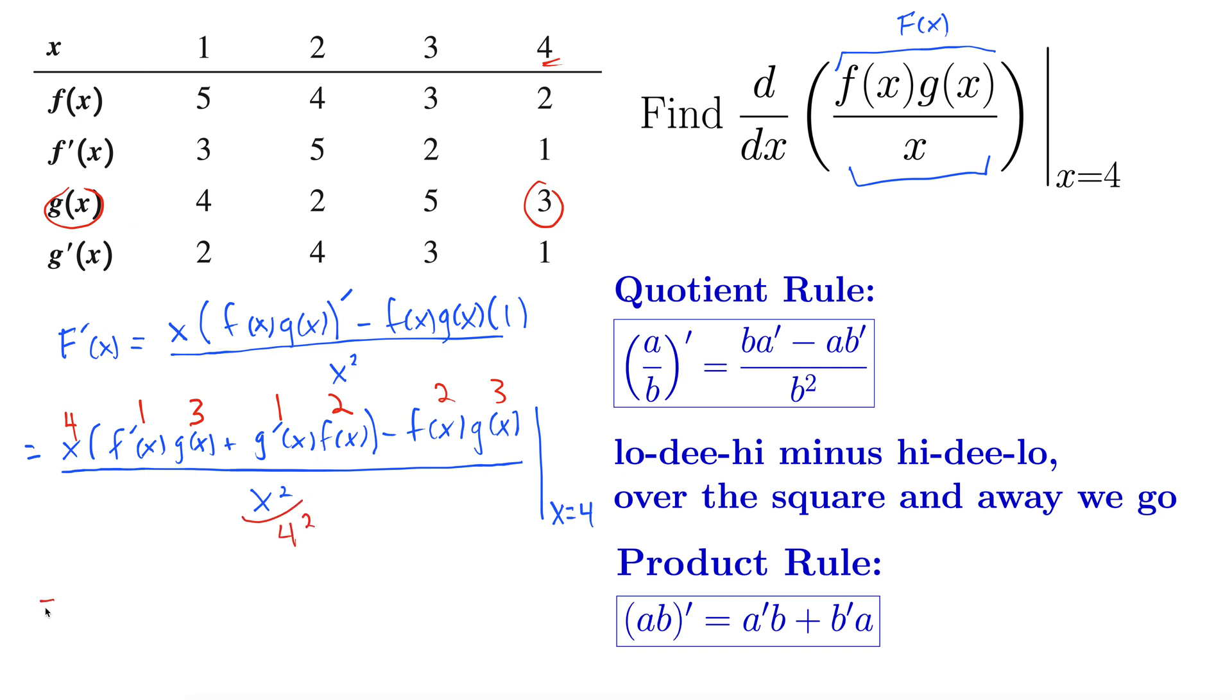Alright let's clean this up so we have 4 times the quantity 1 times 3 plus 1 times 2 minus 2 times 3 all over 4 squared which is 16, so 4 times 5 minus 6 all over 16. Well that's 20 minus 6 over 16.